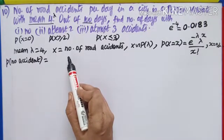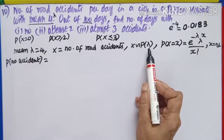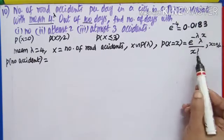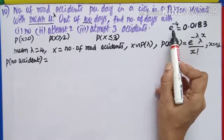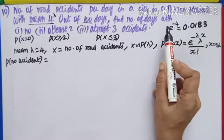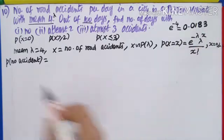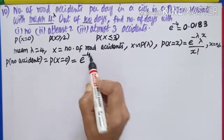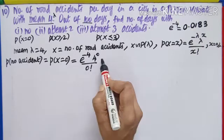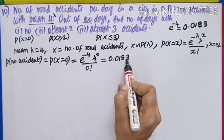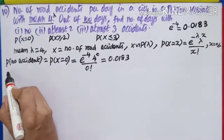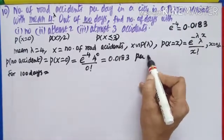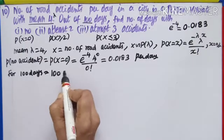Lambda = 4, x is the number of road accidents, and X follows Poisson with parameter lambda. P(X = x) = e^(−4) · 4^x / x!. We find e^(4) from the table; 1 divided by that value gives e^(−4) = 0.0183. First question — no accident, x = 0: P(X = 0) = e^(−4) · 4^0 / 0! = 0.0183. This is per day; for 100 days, multiply by 100.